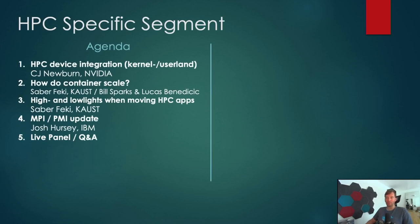We have four or five lightning talks. First, CJ will talk about HPC device integration — how device mapping, kernel, and userland drivers are involved. Sababill and Luca will discuss how containers scale: what's the difference between an on-prem cluster with shared file systems and diskless nodes versus a normal container cluster with independent nodes.